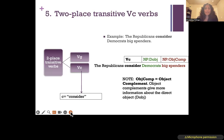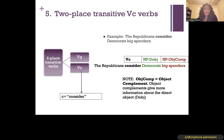The next verb type is another two-place transitive verb called a VC verb. The lowercase c in VC stands for the verb consider, so these are verbs that pattern like consider. It's important to note that for VG and VC verbs, there aren't very many verbs that fit into these categories. If you're not sure whether you're looking at a VG or VC, it's probably a VT — the most common verb type. Now let's look at the sentence: the Republicans consider Democrats big spenders. Here we have our VC verb consider — the most prototypical verb of this type, which is why it's named after it.